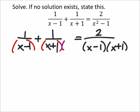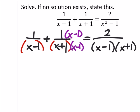So the x plus 1 is missing in x minus 1, which we'll multiply by the numerator as well. And the x minus 1 is missing in x plus 1, so we're going to multiply that by the numerator as well.